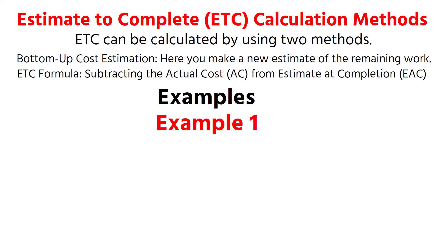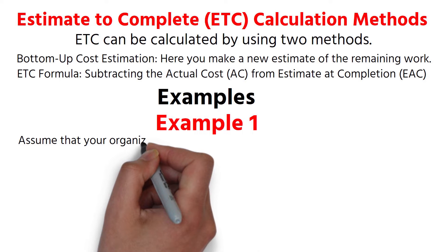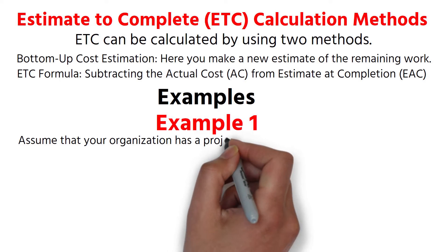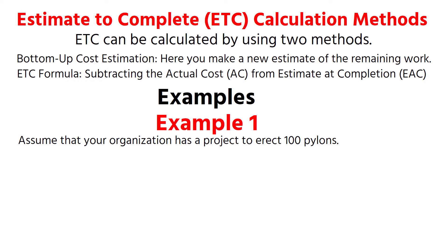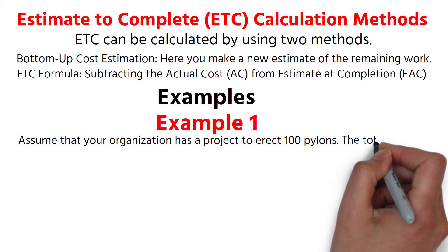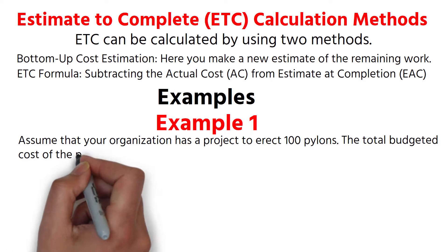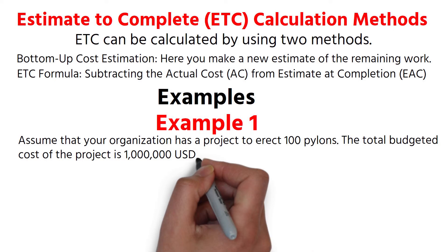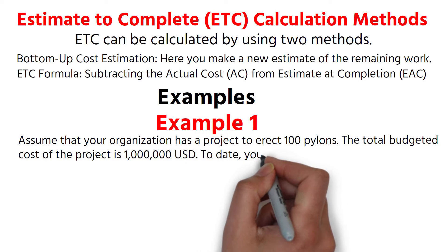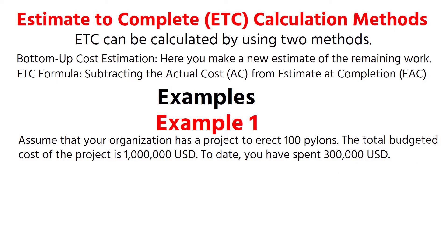Example 1. Assume that your organization has a project to erect 100 pylons. The total budgeted cost of the project is 1 million US dollars. To date, you have spent 300,000 US dollars.